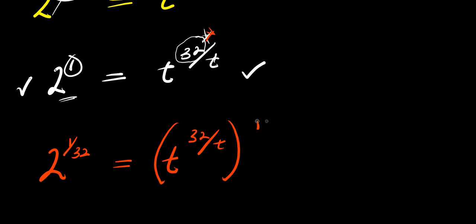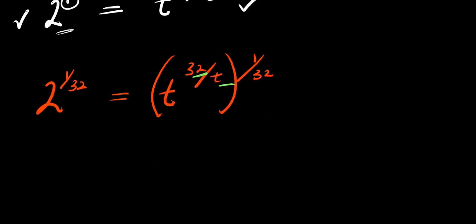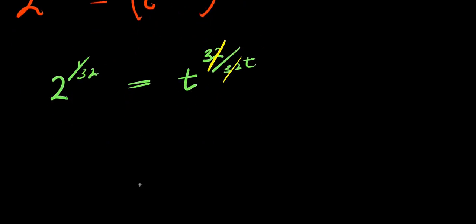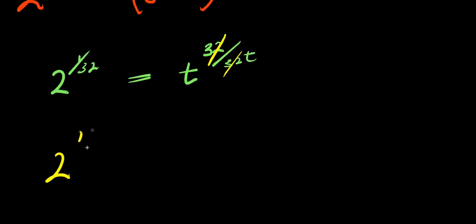So what we are going to do is multiply this out: 32 times 1 is 32, t times 32 is 32t. So what we are going to have is 2 to the power of 1 over 32, and this equals t to the power of 32 times 1, that is 32 divided by t times 32, that is 32t. So 32 eliminates 32, and what we have left is simply 2 to the power of 1 over 32, and this equals t to the power of 1 over t.